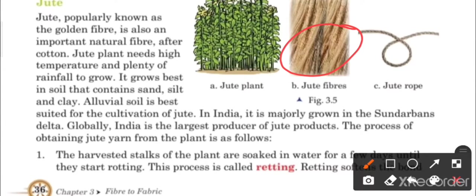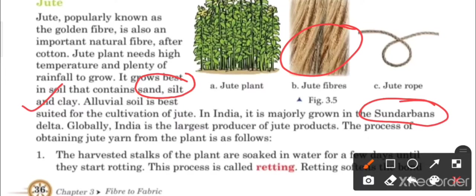Jute grows best in soil that contains sand, silt, and clay. Alluvial soil is best suited for the cultivation of jute. In India, it is majorly grown in the Sundarbans delta. Globally, India is the largest producer of jute products.